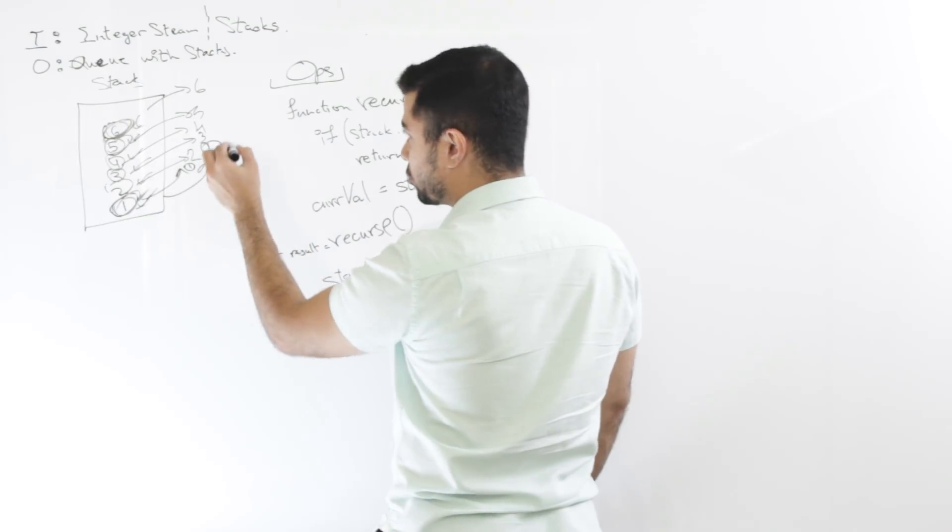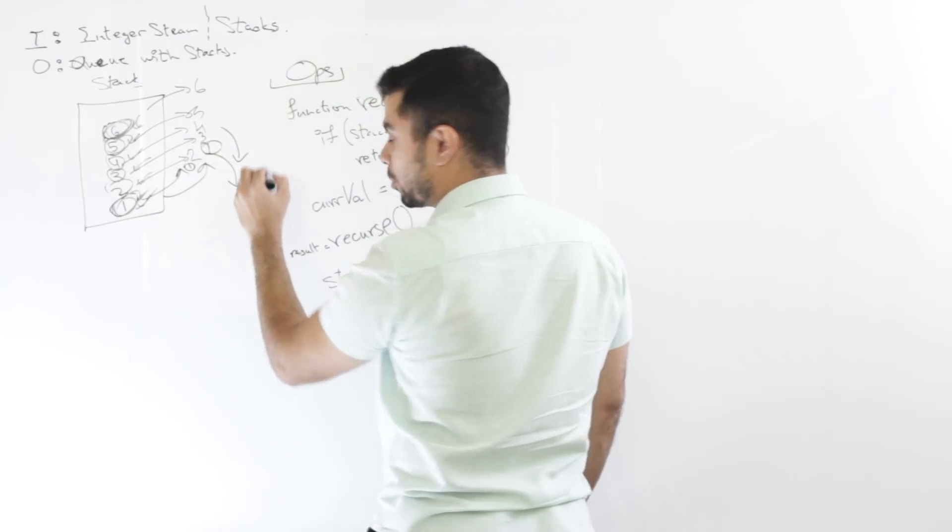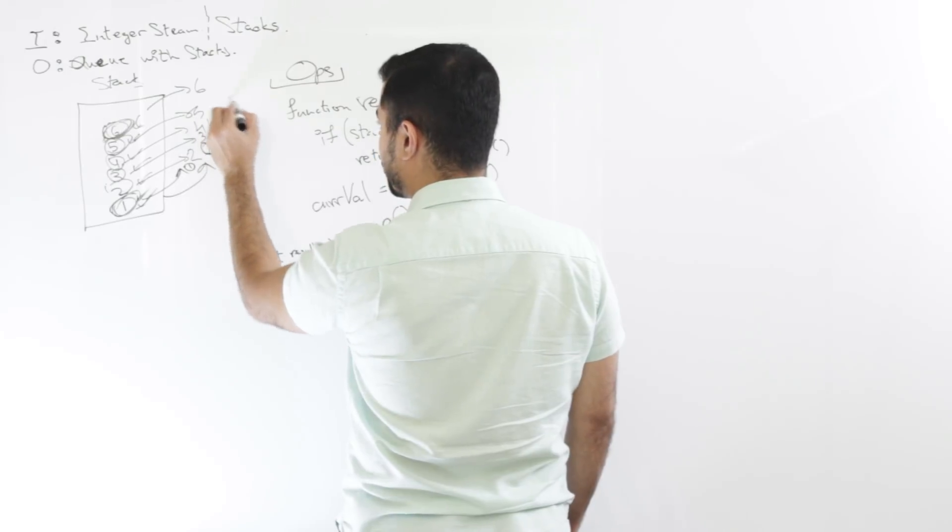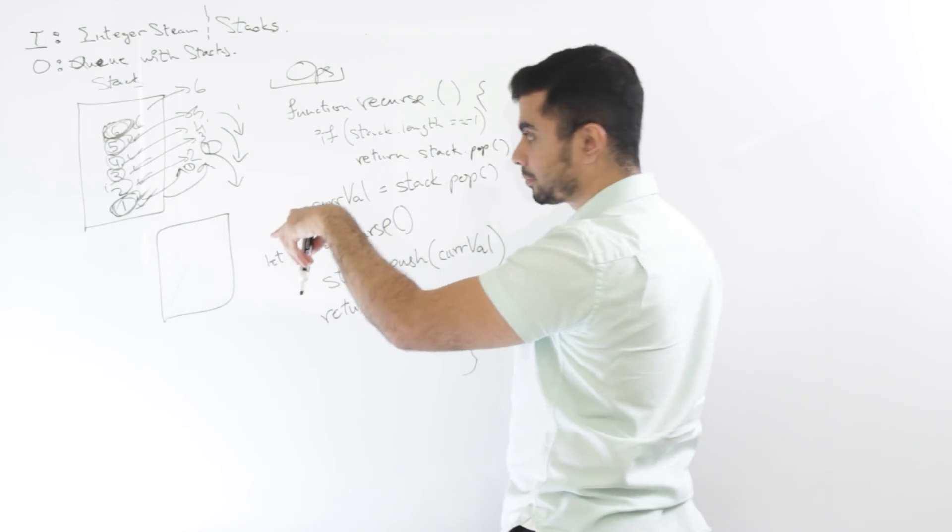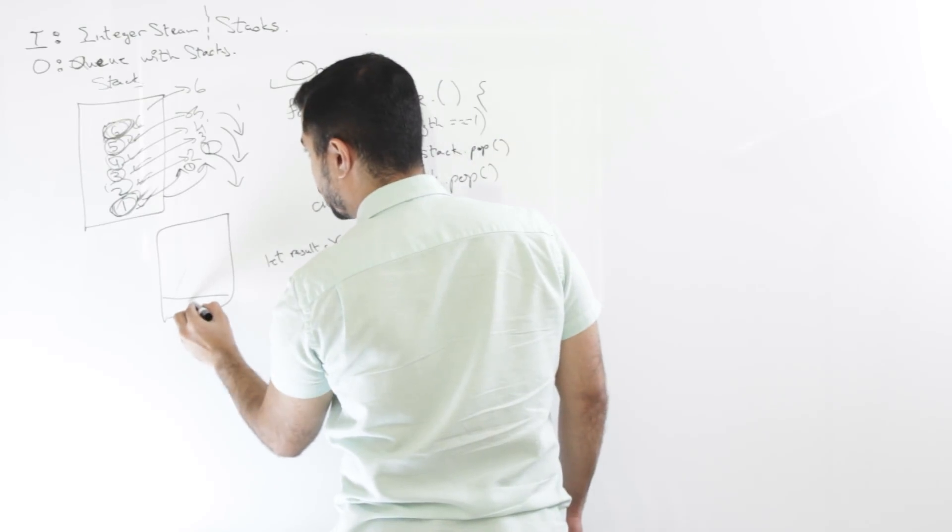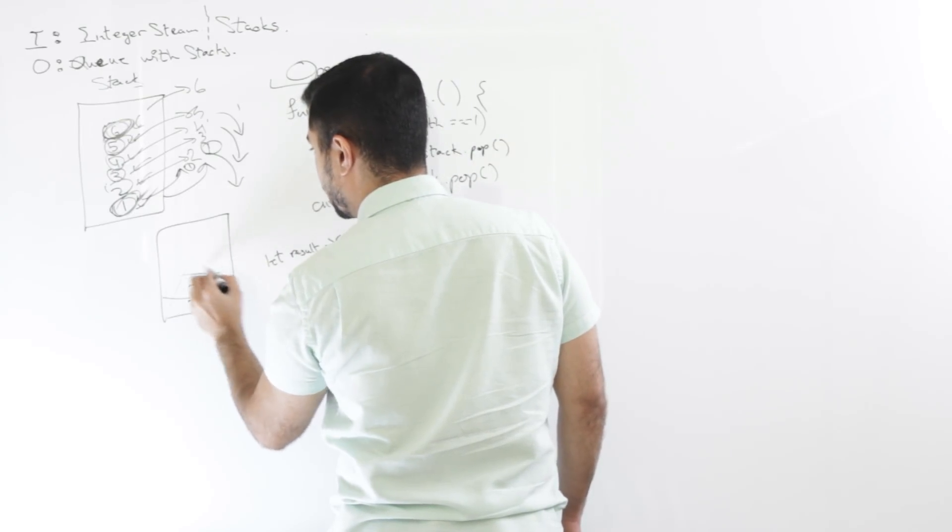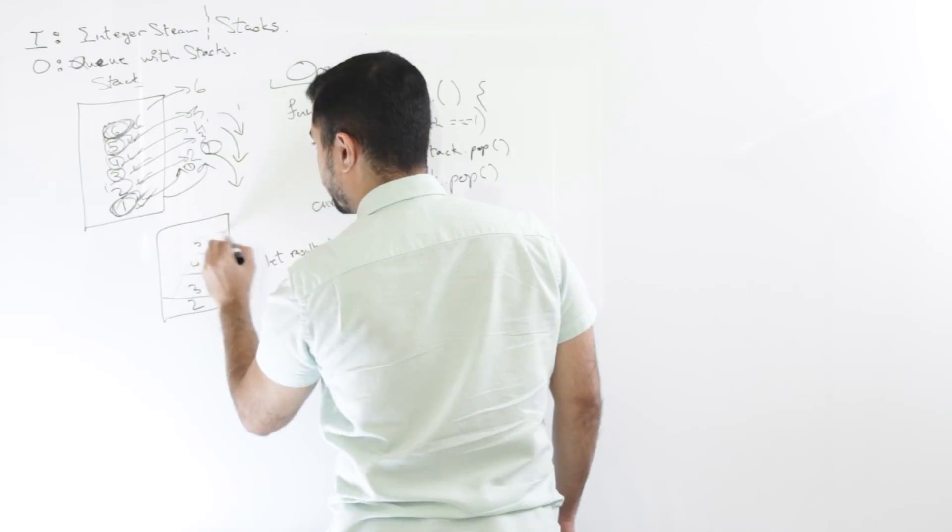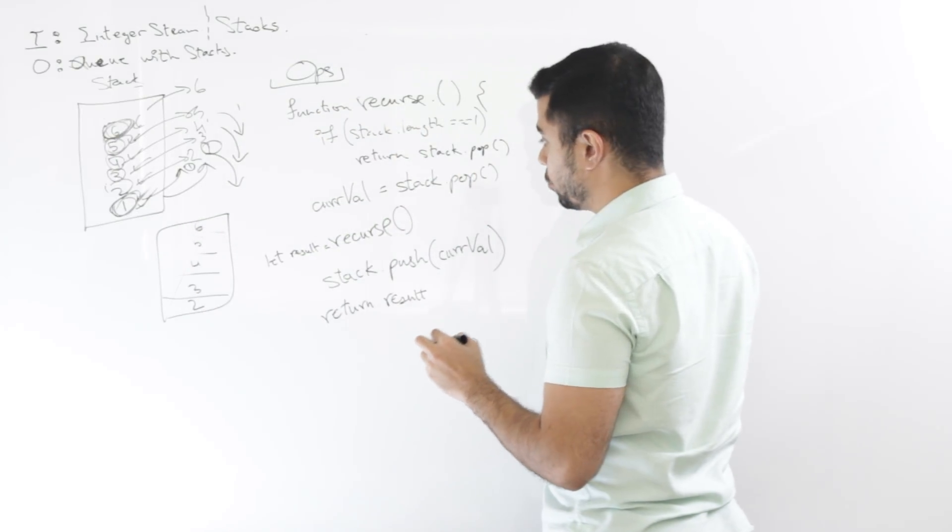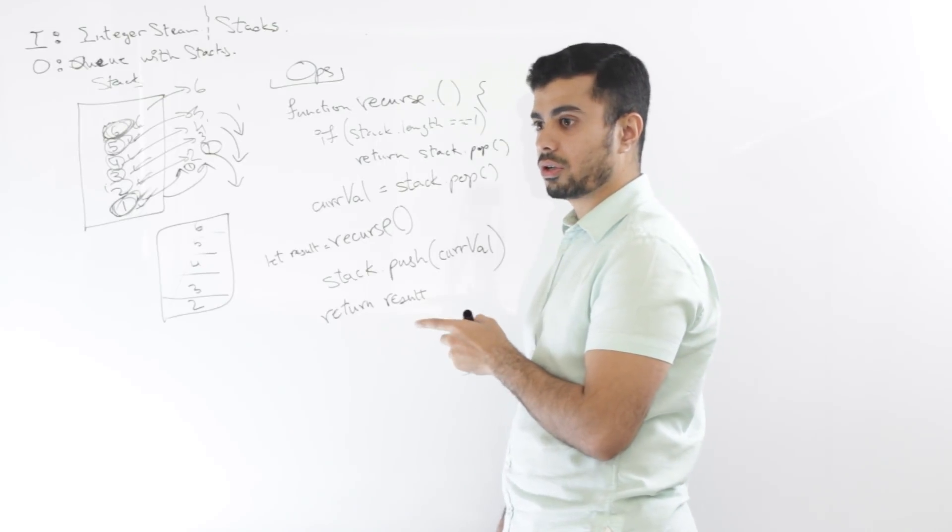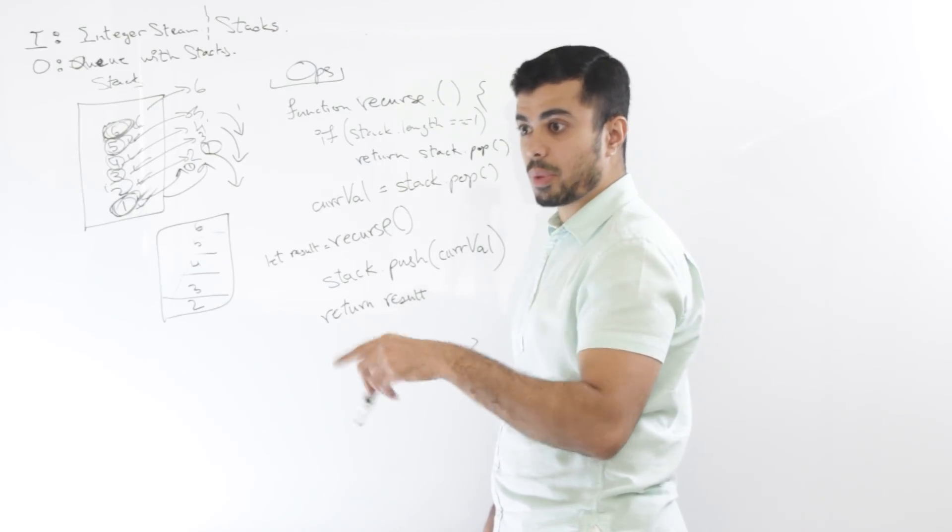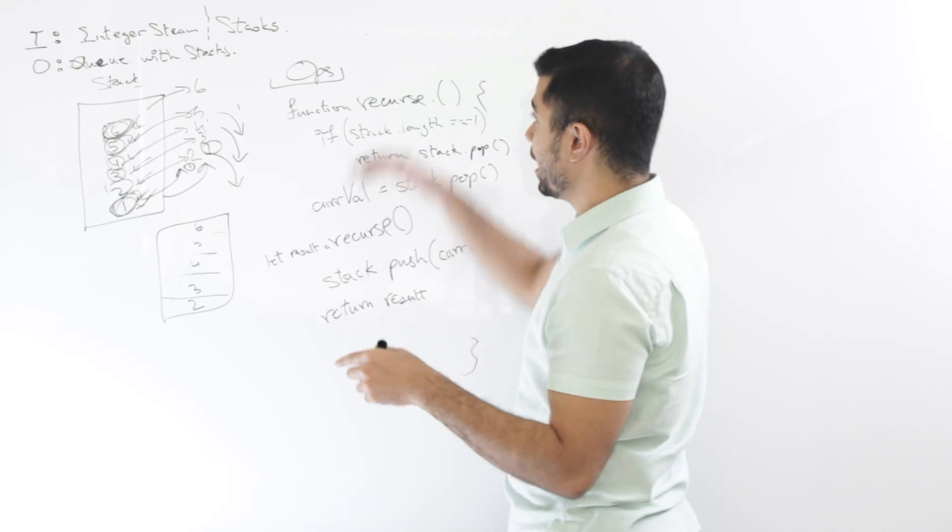Mm-hmm. And then it returns three. Then three is pushed back against the bottom of the stack. It returns four, so on and so forth. So it's the same stack that we are operating on. Mm-hmm. So the final result of the stack will be two, three, four, five, and six. Mm-hmm. So this would give me the result, mimicking a queue using just one stack. And obviously.